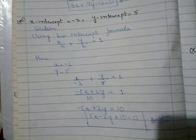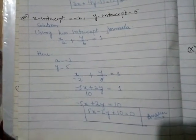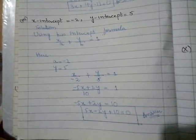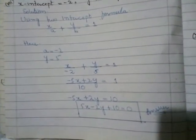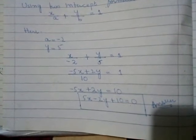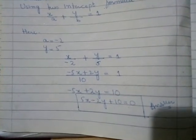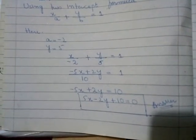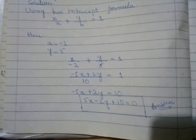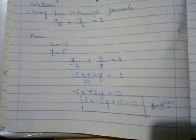Question number 8: x-intercept is equal to −2 and y-intercept is equal to 5. Solution: using two-intercept form, X/a + Y/b = 1. Here a = −2, b = 5. X/(−2) + Y/5 = 1. Taking LCM of 10: −5x + 2y = 10. Rearranging: 5x − 2y + 10 = 0. This is our required equation of a straight line.